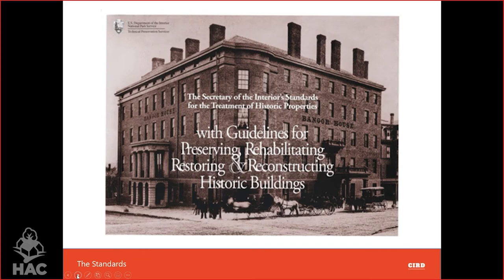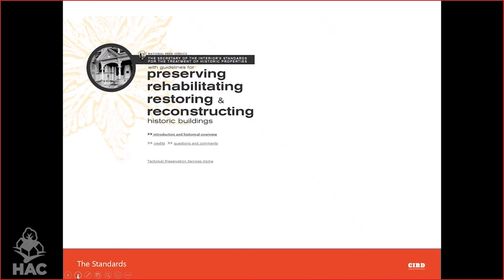In the United States, historic preservation policy is governed by the Secretary of the Interior Standards for the Treatment of Historic Properties, produced in response to the National Historic Preservation Act of 1966. It's published by the National Park Service and is the federal policy for how we treat historic buildings. There are four different standards: preservation, rehabilitation, restoration, and reconstruction — commonly used interchangeably, but they mean very different things under Federal Preservation Protocol. Preservation is about extending the life of what remains, minimizing change as much as possible.